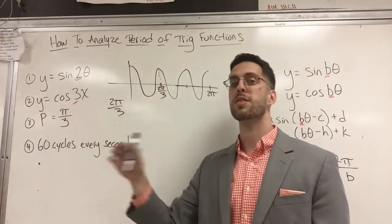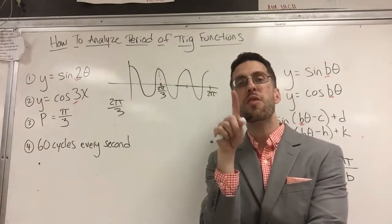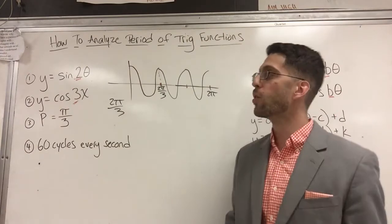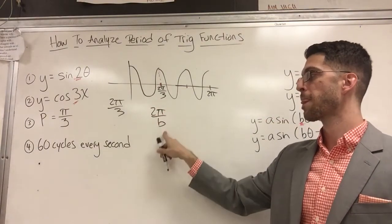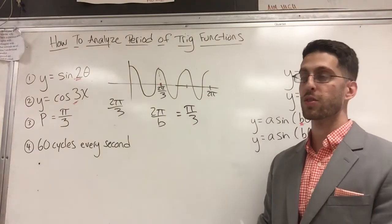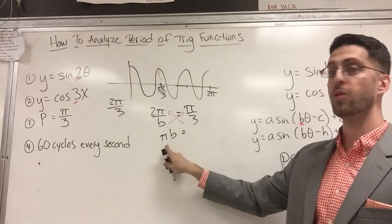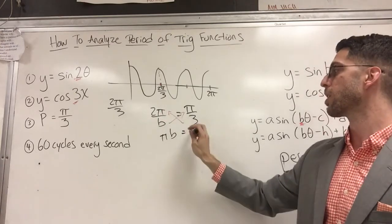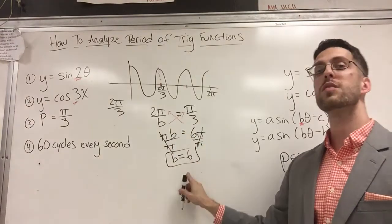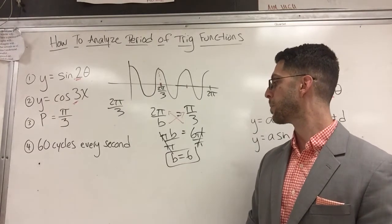How many of those graphs could I fit in a two pi span? You can draw it, you can imagine it, you can do some common sense, or you can just use the formula. My period formula is this, but the period is that. If this is period and that's period, then they must be equivalent. Just set that equal to that. Cross multiply, you get pi b. Six pi divided by pi on both sides because I'm trying to get the b alone. My b is six.